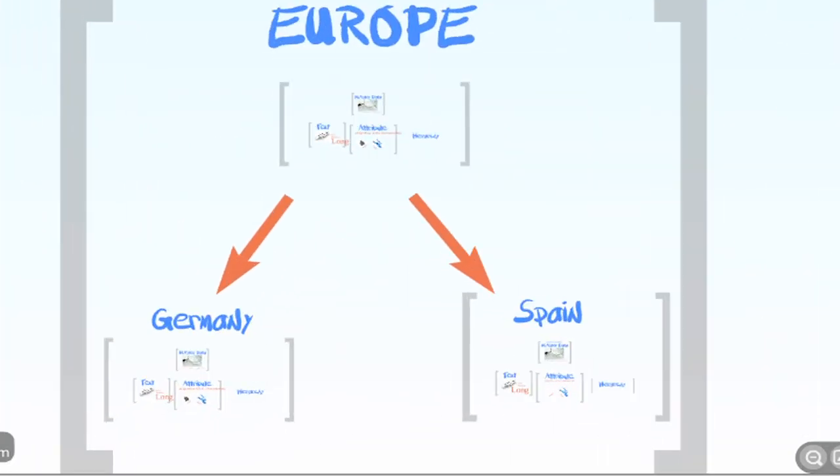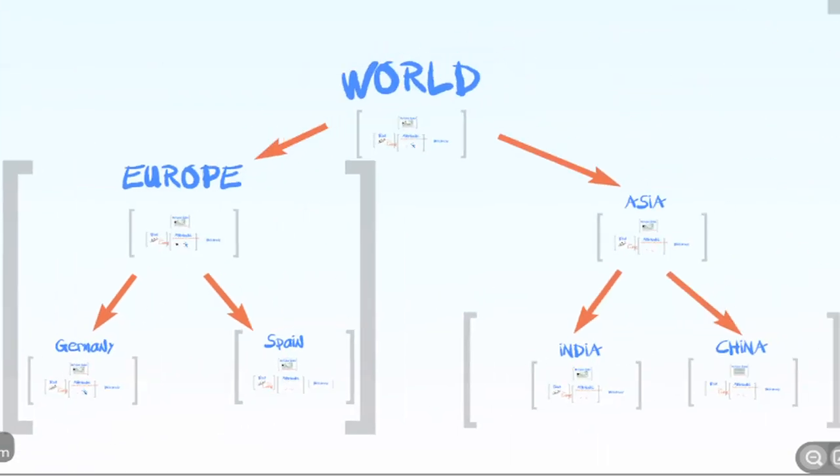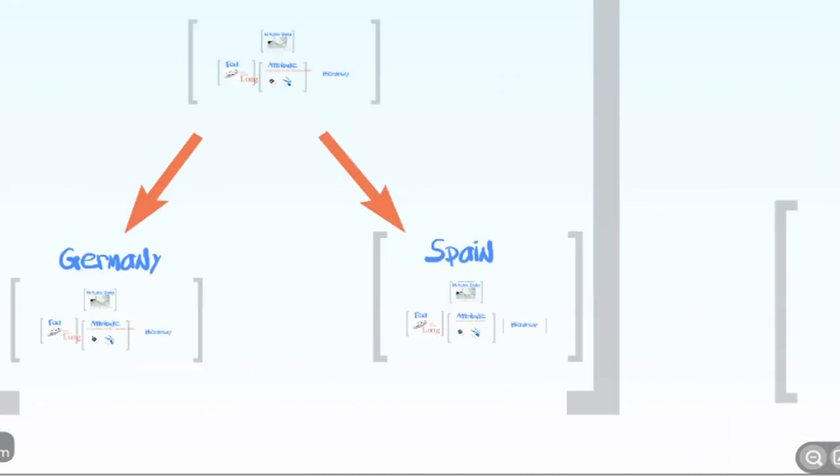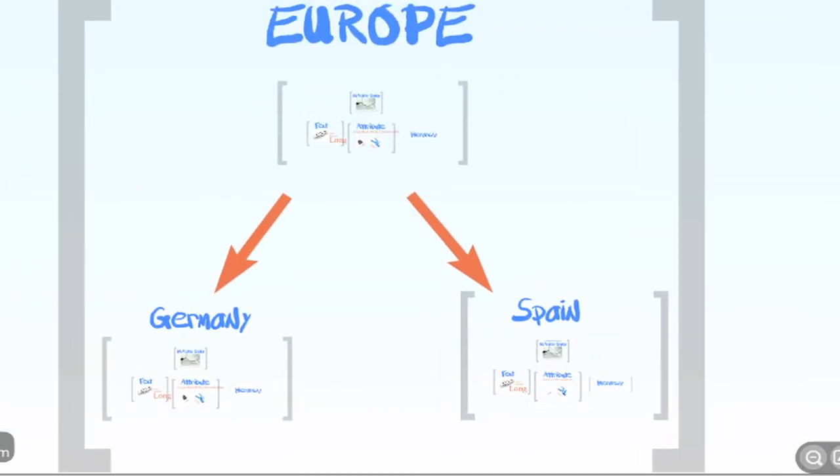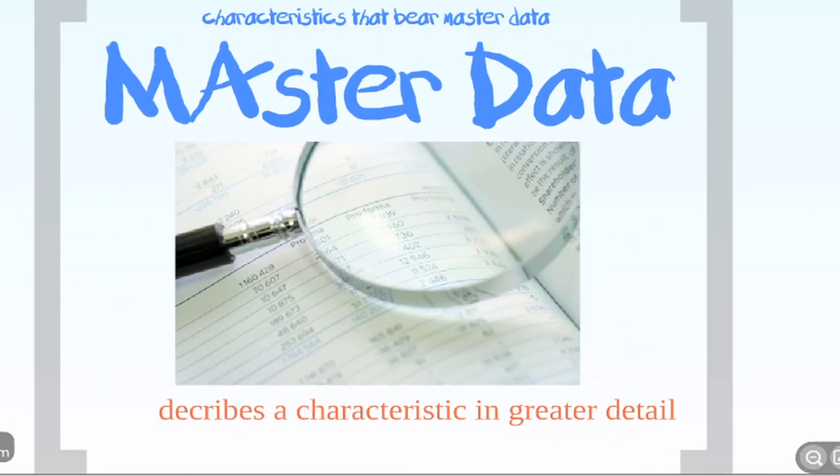We can actually go even further to describe more hierarchy nodes to include other parts of the world. It is used to describe characteristics in greater context.